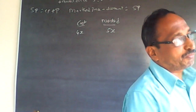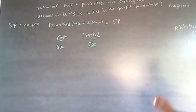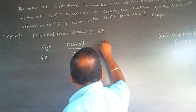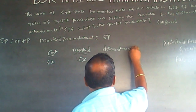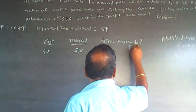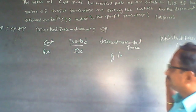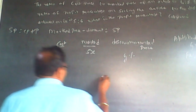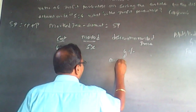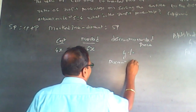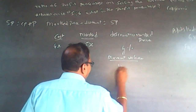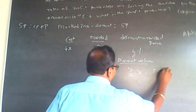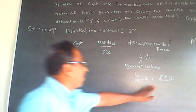Now they are talking about percentage of profit and discounts. Let Y be the discount percentage on mark price. The discount value will be Y divided by 100 of 5x, which equals 5xy/100. Discount percentage and discount value are different things.